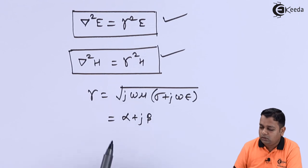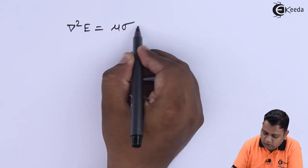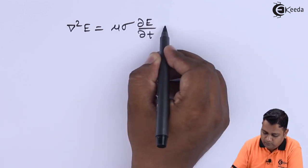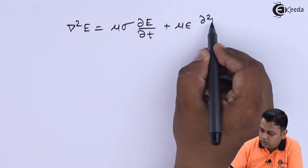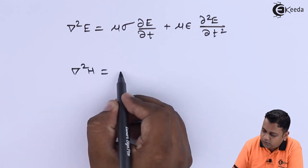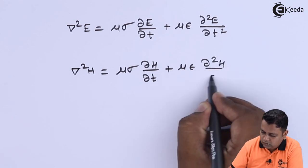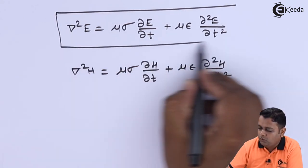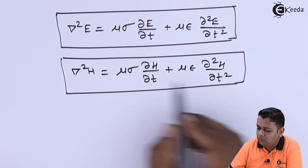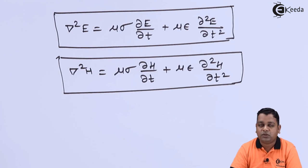The time-domain forms of the microwave equations are: del-squared E equals mu-sigma times (del E/del t) plus mu-epsilon times (del² E/del t²), and del-squared H equals mu-sigma times (del H/del t) plus mu-epsilon times (del² H/del t²). These are the two very important microwave equations for the electric and magnetic fields in both time and frequency domains. By the next lecture we shall cover Poynting's theorem with respect to microwave propagation. I hope you understand the fundamentals of microwave engineering. For more details, subscribe to the Ekeda channel.